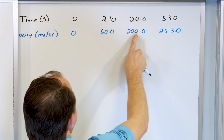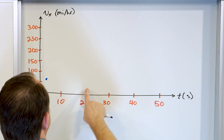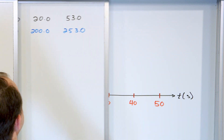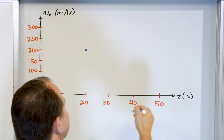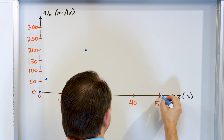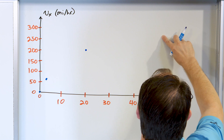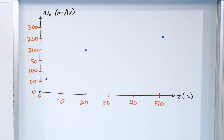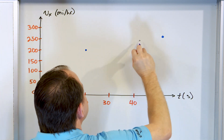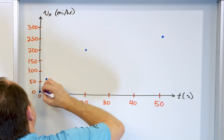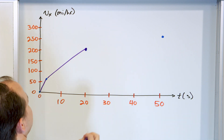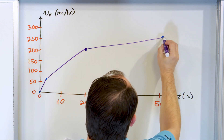The next point is at 20 seconds going 200 miles per hour — easy to find at that intersection. Finally, at 53 seconds we're going 253 miles per hour, so a little bit past 50 on the time axis and a little above 250 on the velocity axis. I'll connect the data points with straight lines since I don't know what's happening in between. Velocity is increasing in general over time.